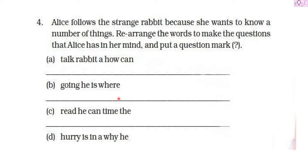This is part of the section 'Let's Write,' question number four. Alice follows the strange rabbit because she wants to know a number of things. Rearrange the words to make the questions that Alice has in her mind and put a question mark. The words are jumbled and not in the correct order, so we have to put the correct word first and the correct word last. Since these are questions, we put a question mark at the end.